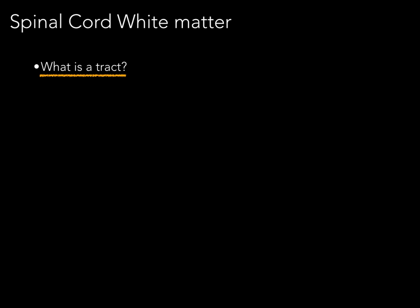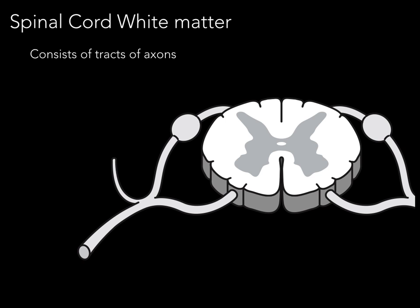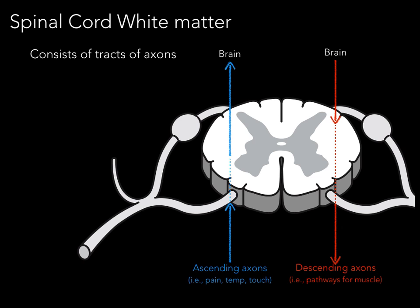What is a tract? To understand what a tract is, we need to take a look at the spinal cord. Spinal cord white matter surrounds the gray matter — it looks like a butterfly in the middle — and white matter surrounds the periphery. It consists of tracts of axons that go up and down the spinal cord, much like cables in an elevator. Ascending axons bring information such as pain, temperature, and touch up to the brain, and they're white because these long axons are myelinated by oligodendrocytes.